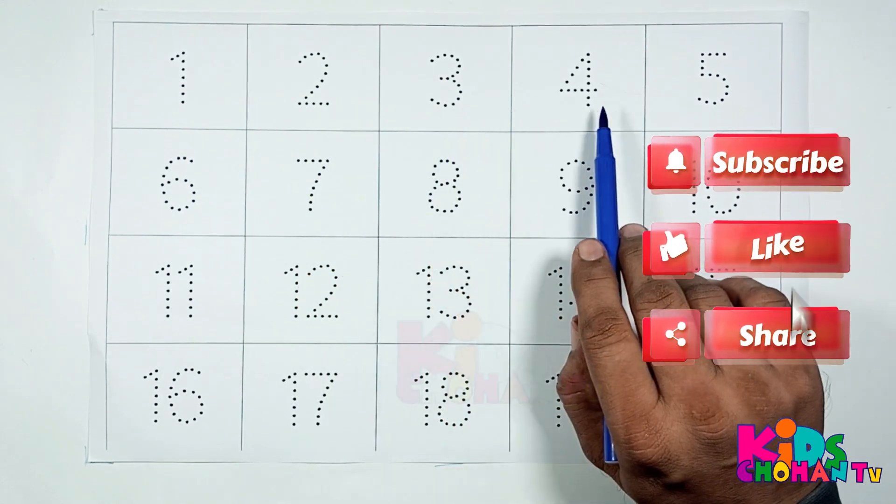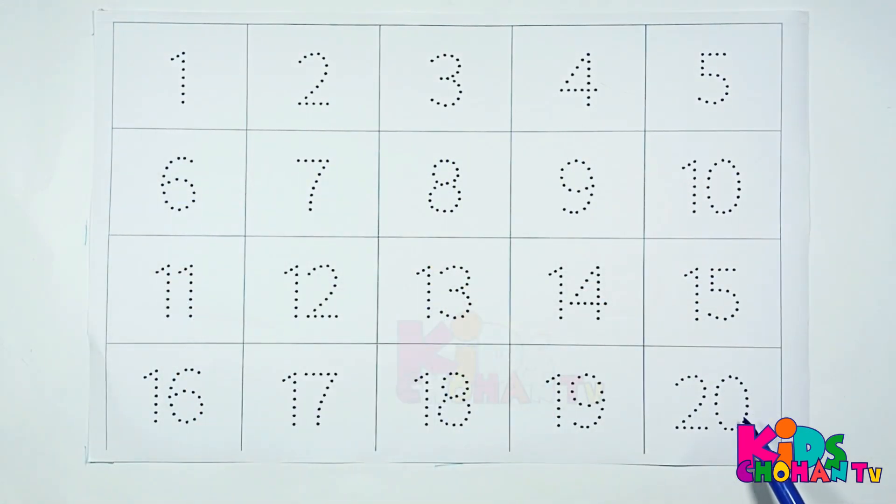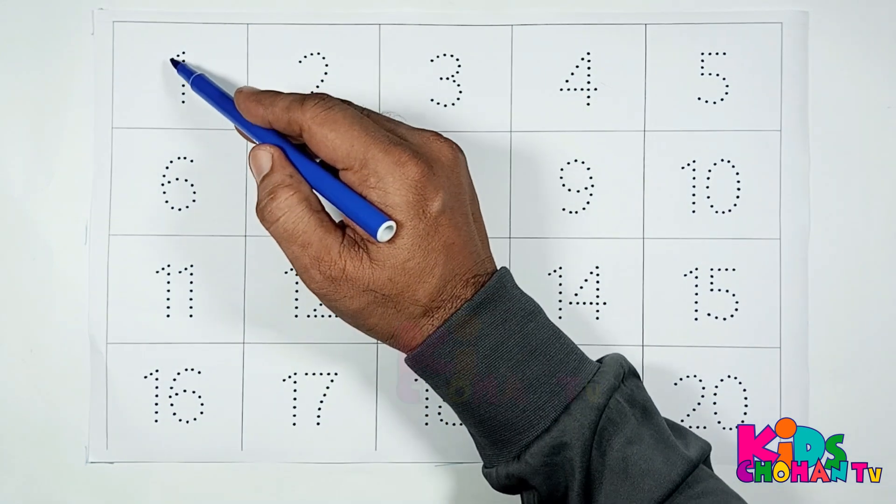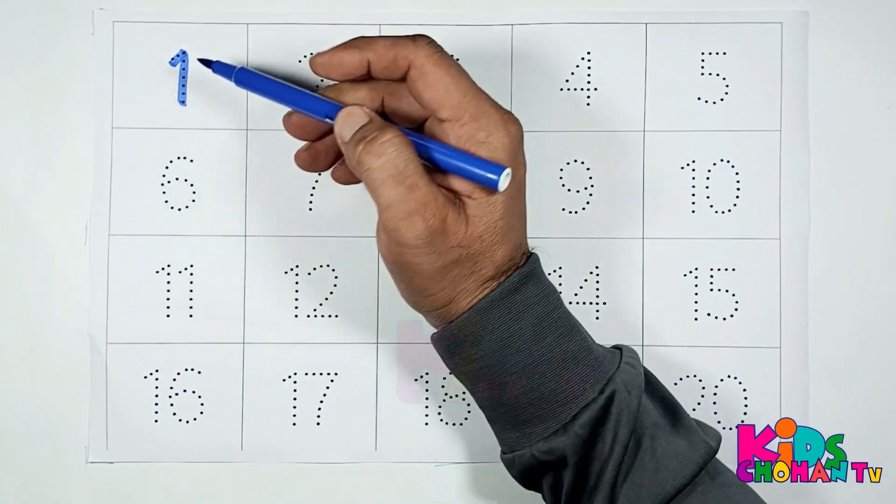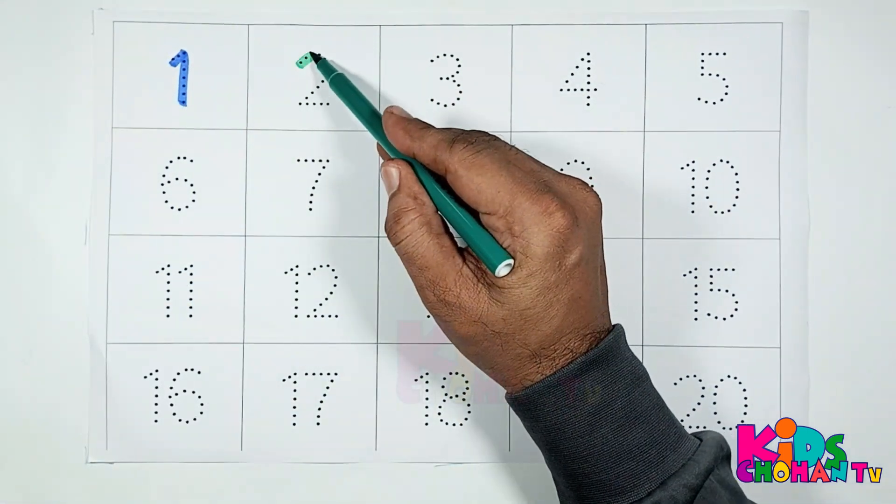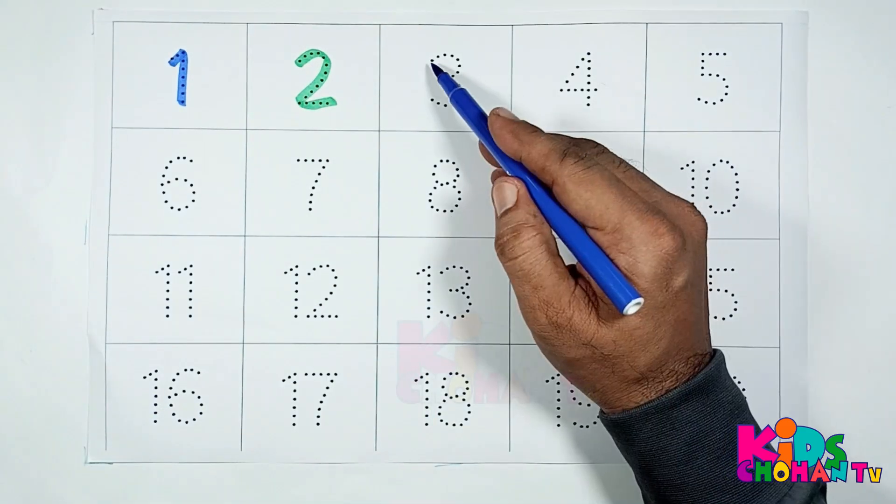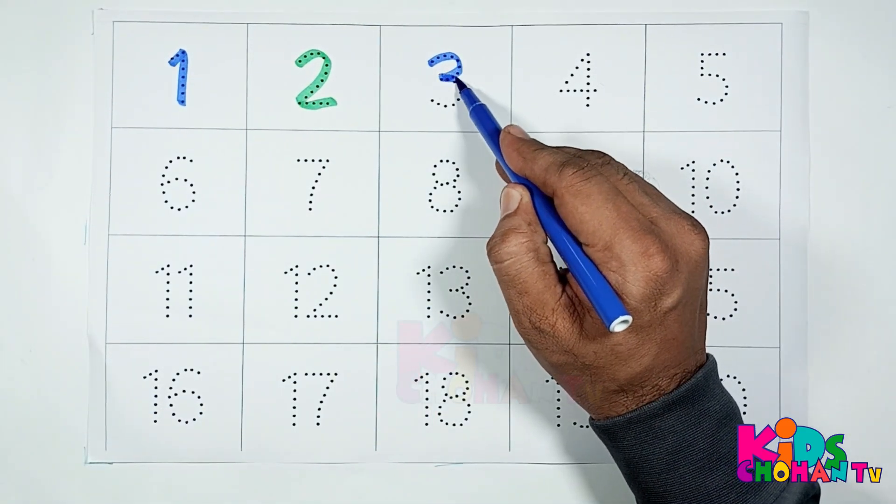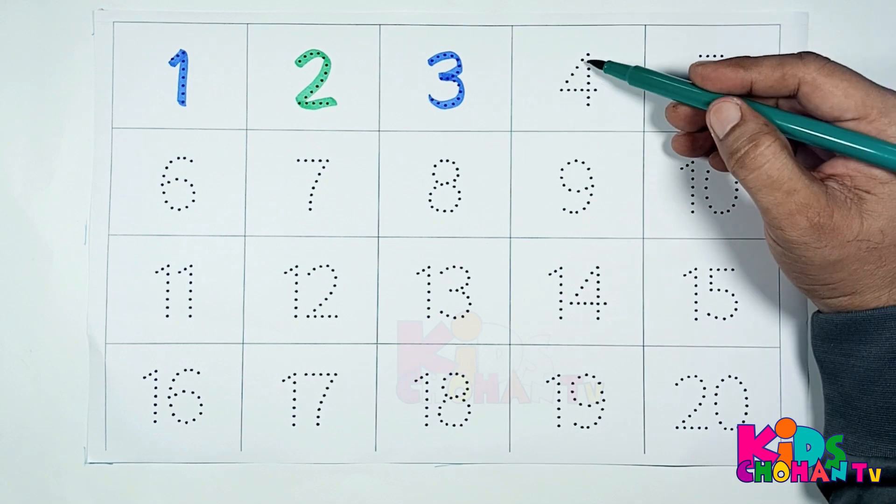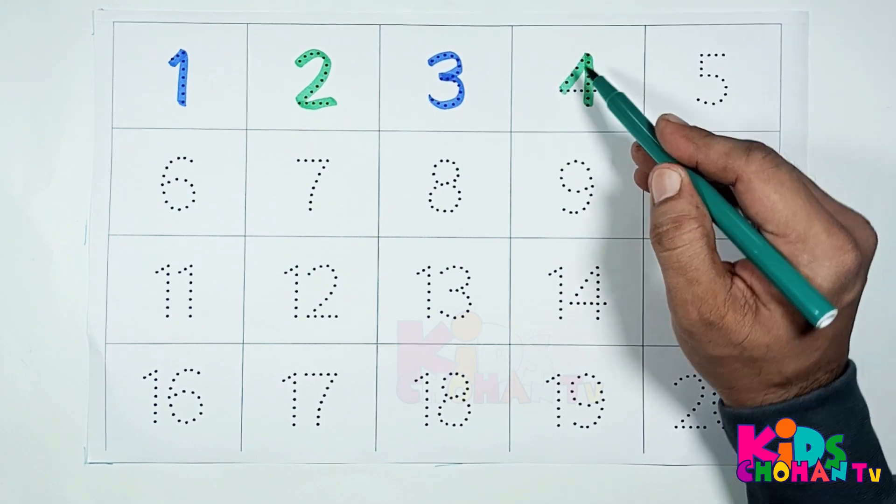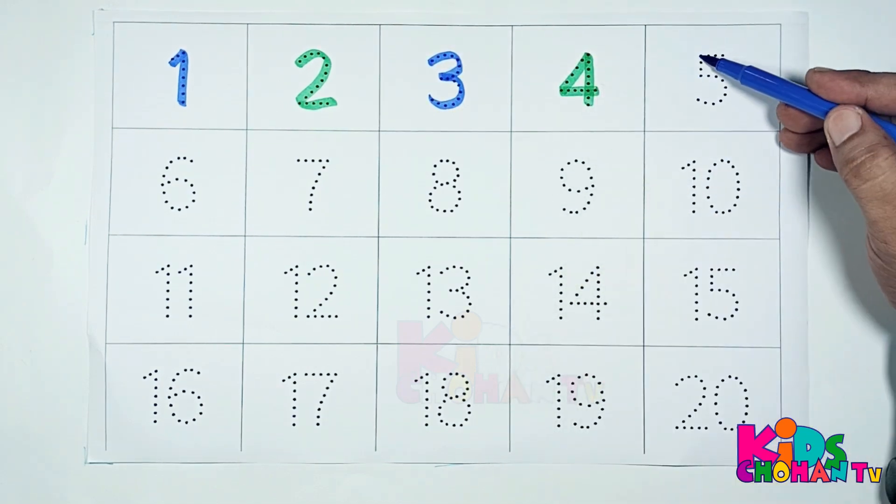2, 3, 4, 1 to 20. Let's start: 1, 2, 3, 4, 5.